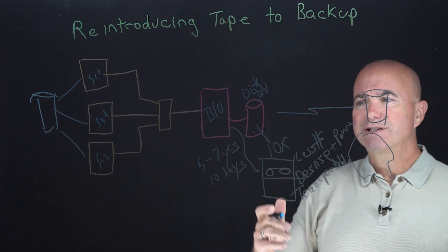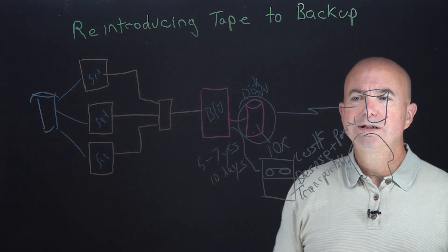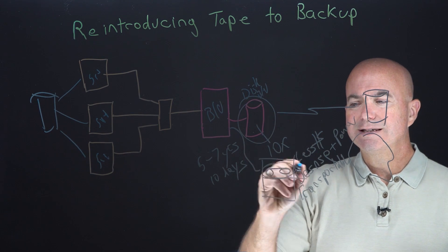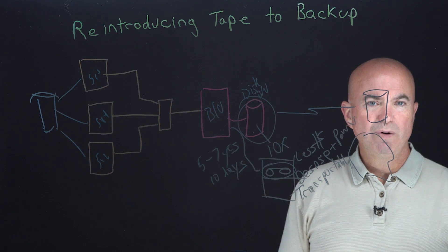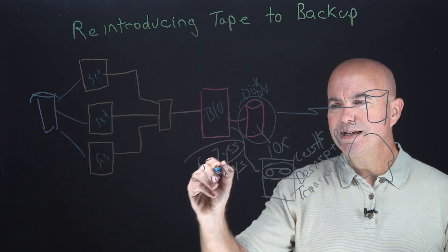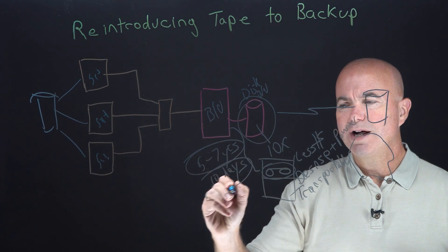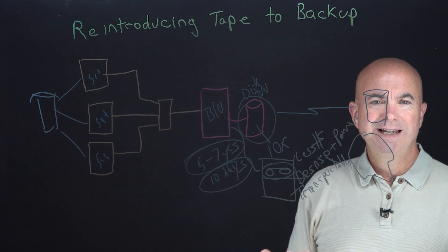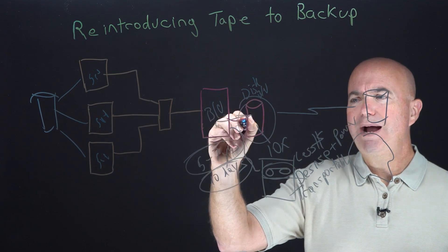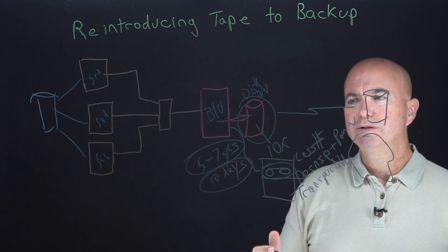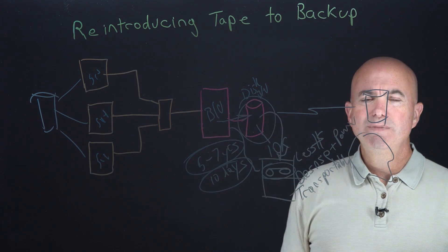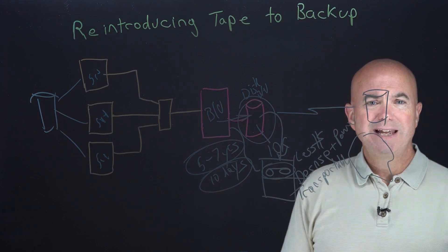Now obviously, the downside and one of the reasons that people want disk as their primary backup means is that single file recoveries and things like that are relatively slow on tape. But again, remember, we're retaining data for five to seven years and most recoveries are going to happen within 10 days of the backup occurring. Why not send your backups to disk first like you normally do, but then over time, take those old backups and move them to tape and let them stay there.